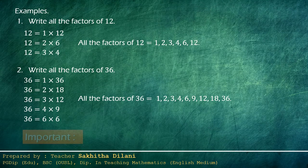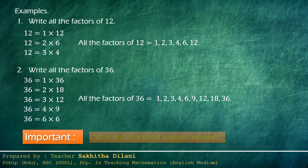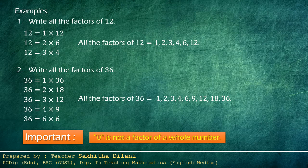There is an important note: zero is not a factor of any whole number. To summarize Method 1: when finding all the factors of a given whole number, write it as a product of two whole numbers in different ways and list out all the numbers that appear in those products — those are the factors of that number.